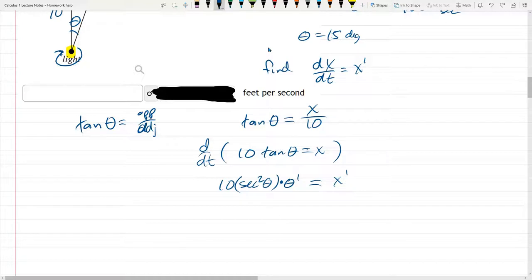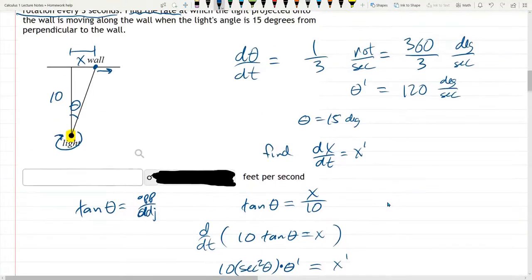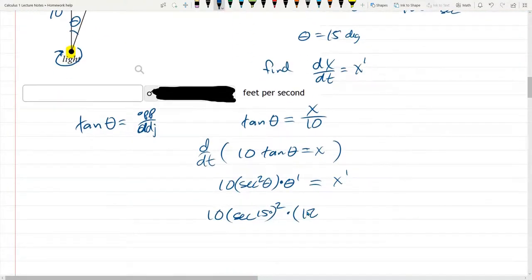I think I can just plug in values right now. Well, secant of 15 degrees. I'm writing this squared outside. I do not like to write secant squared like that whenever I can avoid it. So secant of 15 degrees and then square it. Times theta prime, which is somewhere 120.